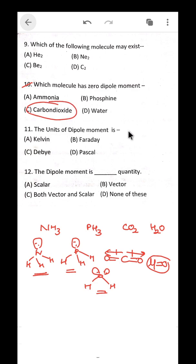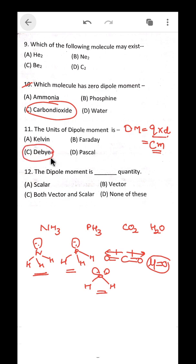The next question is about the unit of dipole moment. The formula for dipole moment is charge multiplied by the separation between the two charges. So its unit is coulomb·meter. This is also called the Debye (D). One Debye equals 3.336 × 10⁻³⁰ coulomb·meter. Dipole moment is a vector quantity — remember that.